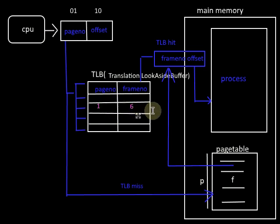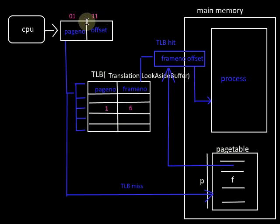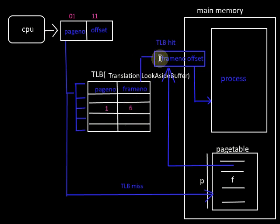This time we add an entry to the TLB: page number 1 is mapped to frame number 6. Now, since the current byte is 0110, most probably the next byte accessed sequentially will be 0111. If the next logical address accessed is 0111, the page number is again 1. We go to the TLB and find the page number — it is a TLB hit. We get the frame number from the TLB itself and access the byte within the process without going to the page table in memory.